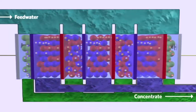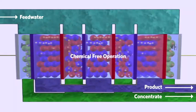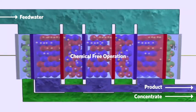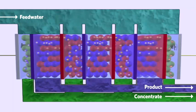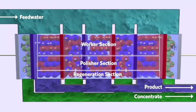As a result, IonPure CEDI systems do not need chemicals for regeneration. The electric potential does all the work. You essentially have a worker and polisher combined into one unit which constantly regenerates.